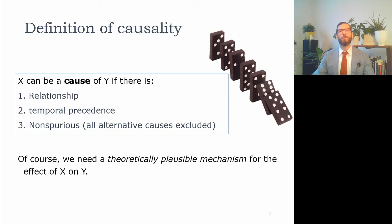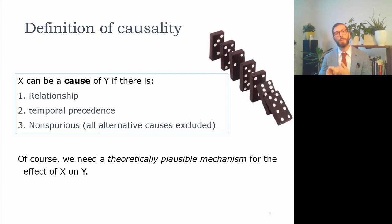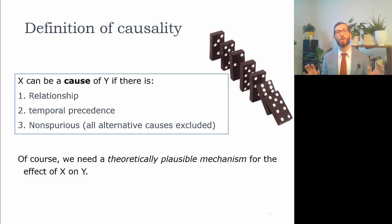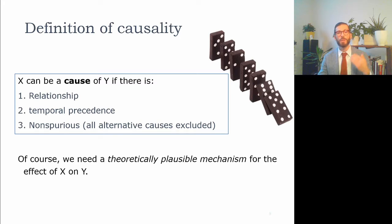But we have to be careful about claims regarding causality. Three conditions must be met for x to be a cause of y. First, there must be a relationship between x and y. Second, the predictor x must precede the outcome y in time. Third, the association must be non-spurious — all other alternative causes for the relationship must be excluded. We must also have a theoretically plausible mechanism by which x can affect y.